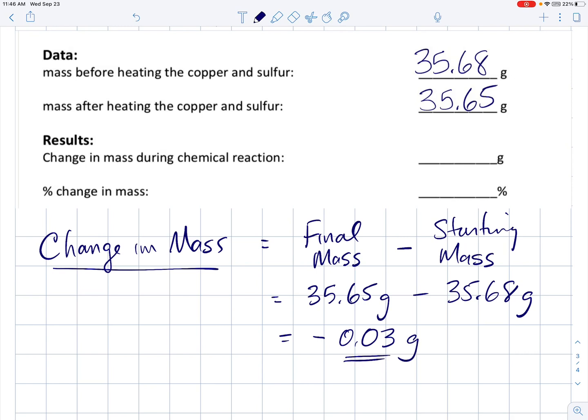That negative sign is very important. It means the mass dropped. So the starting mass was bigger than the final mass. When I subtract, I'm taking a smaller number and subtracting a larger number. I get a negative answer. If your mass had increased, then the final mass would have been larger than the starting mass, and you would get a positive answer for the change in mass. So do not just take the larger minus the smaller. Always do the final minus the starting if you're calculating a change in mass.